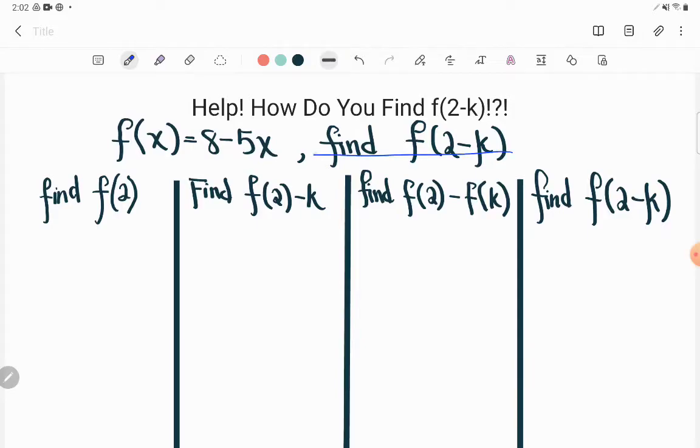So first instead of finding f of 2 minus k, I'm just going to find f of 2. That's simpler and let's go ahead and do that. Finding f of 2 just means plugging 2 in where I used to see x. So let's go back to my f of x. It said 8 minus 5x, but if I'm doing f of 2 I'm not going to see x anymore. Now I'm going to see a 2 where x used to be.